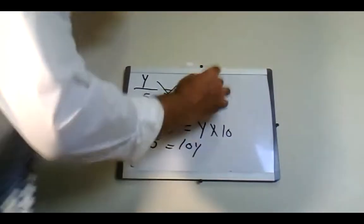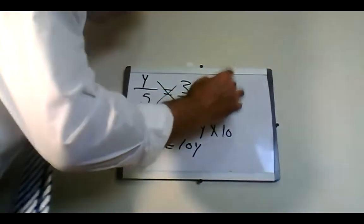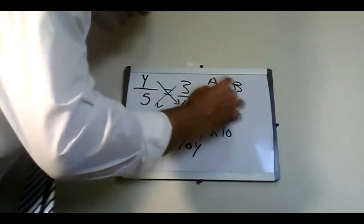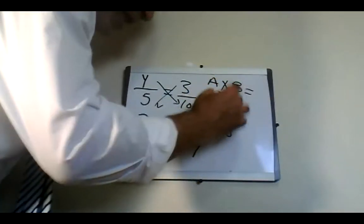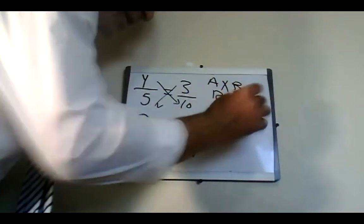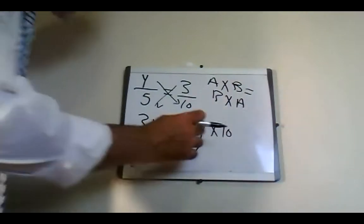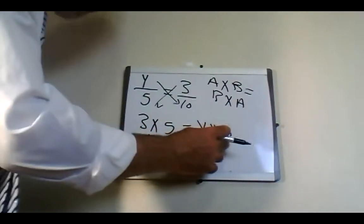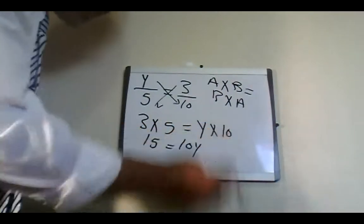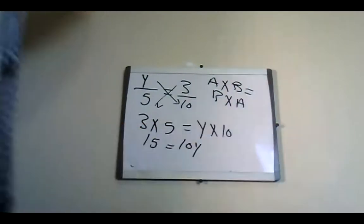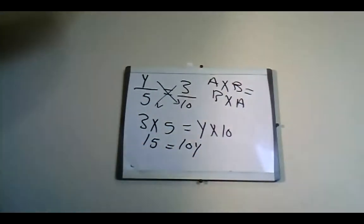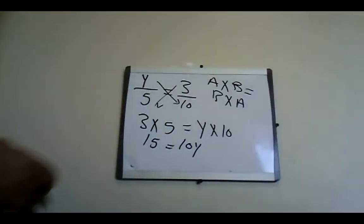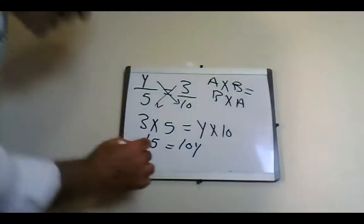Since a times b equals b times a, when I say y times 10, it is the same as 10y. So now I need to find y: 3 times 5 equals 15, and that equals 10y.